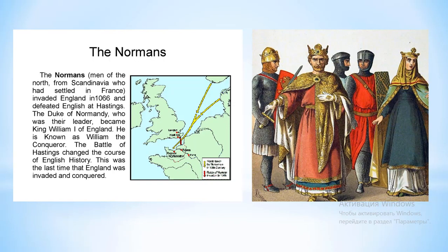The Normans who conquered England were originally members of the same stock as the Danes who had earlier conquered it. The ancestors of both were bands of Baltic and North Sea pirates who happened to immigrate in different directions. A little farther back, the Normans were close cousins in the general Germanic family of the Anglo-Saxons themselves. The exploits of this whole race of North Sea kings make one of the most remarkable chapters in the history of medieval Europe. In the 9th and 10th centuries, they mercilessly ravaged all the coasts of Western Europe, from the Rhine to the Adriatic Sea.